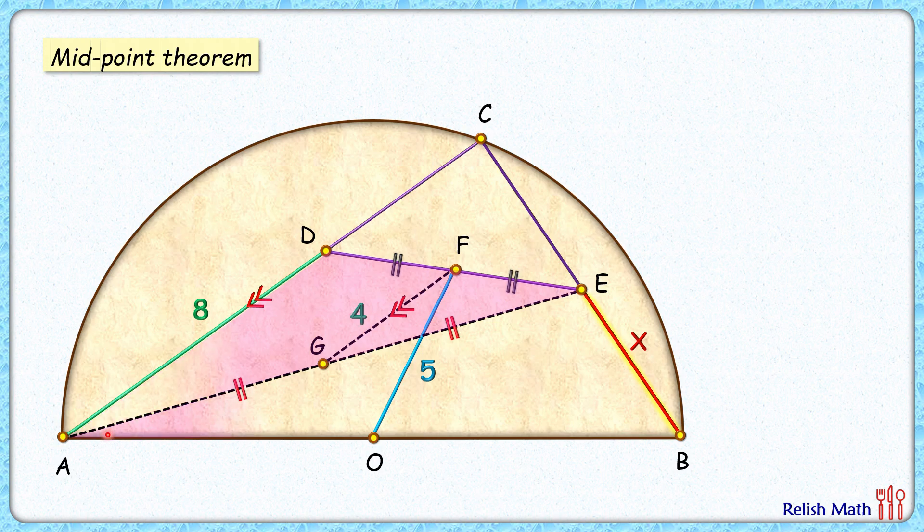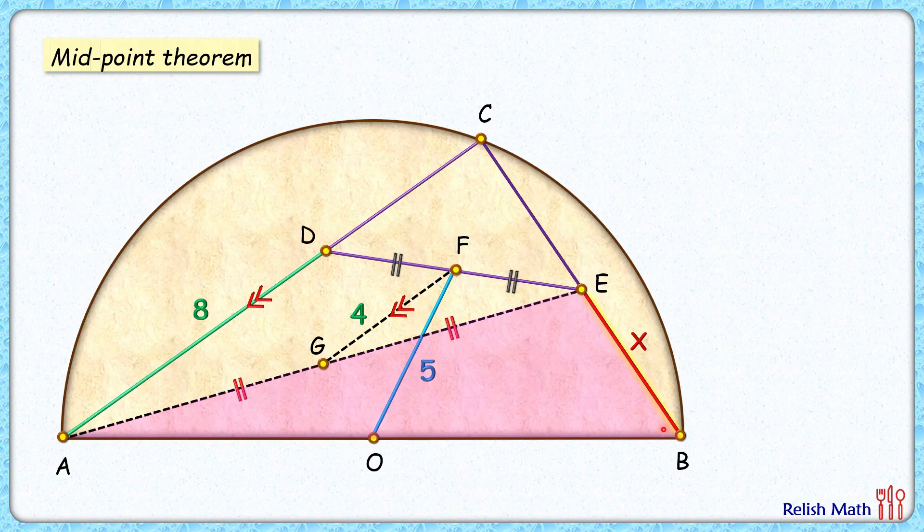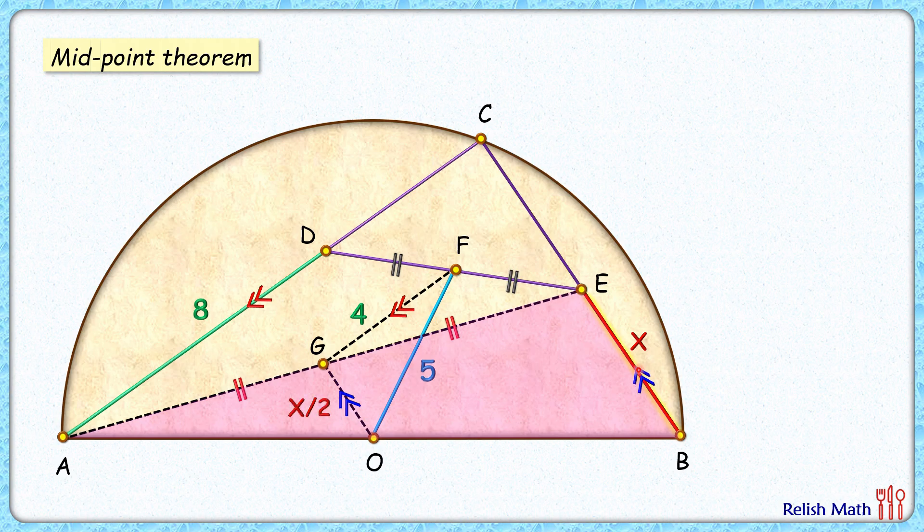Same way, if we consider triangle AEB, in this triangle G is the midpoint, O is the midpoint. If we join them and apply midpoint theorem, we'll get GO is parallel to EB and GO length is half of EB.